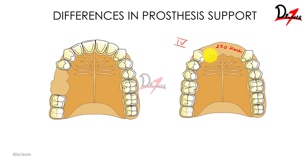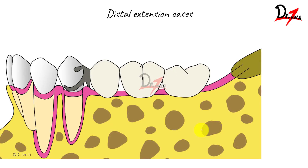This concerns the displaceability of the tissues in Class 4, Class 1, and Class 2 situations. Here we have a distal extension case — it can be Class 1 or it can be Class 2.